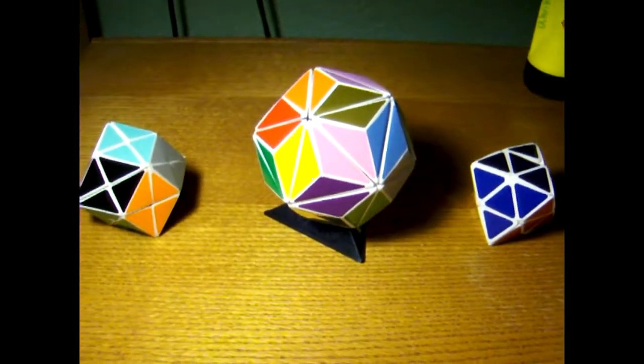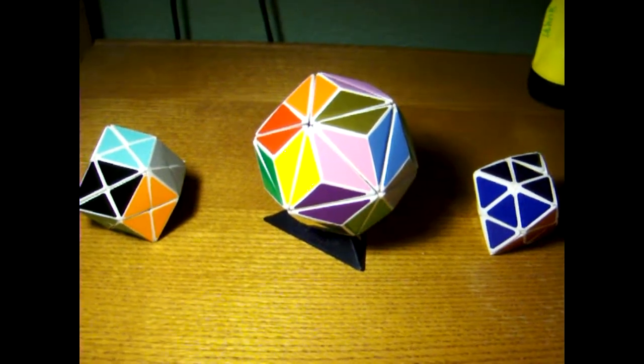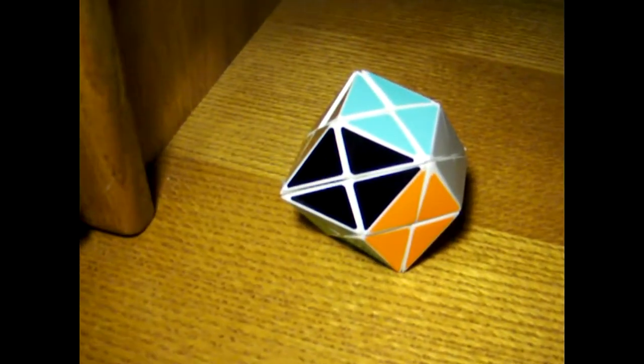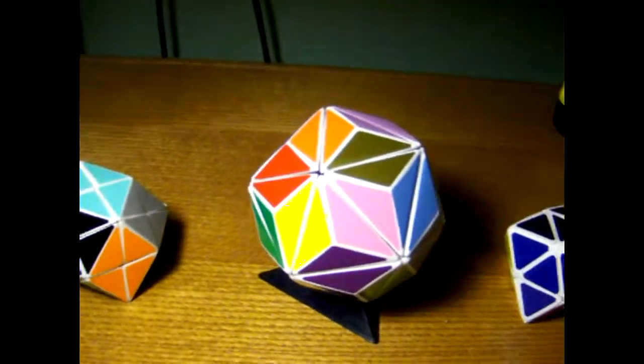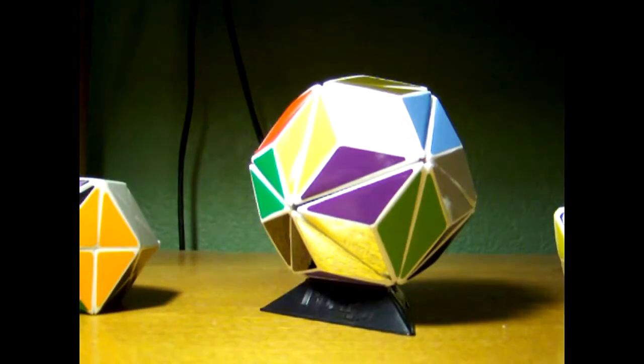Hey, this is Yurik, and this is my Rhombic Tricontahedron. As you can see, it's very similar to the mini rhombic in the sides, and here's how this puzzle works.